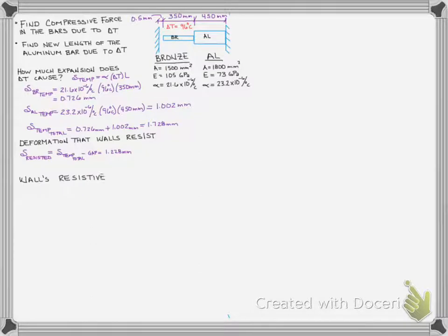So if we want to figure out then how much the wall is going to resist, we have to now look at our new system. And our new system is a fixed-fixed system. We can draw this now once the gap is closed and recognize that this system has to resist a deformation of 1.228 millimeters. And as it resists that 1.228 millimeters, it's going to develop some forces.